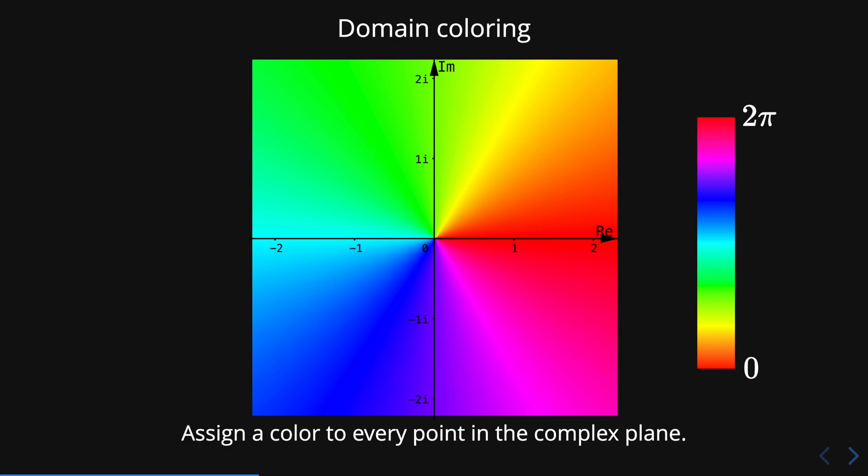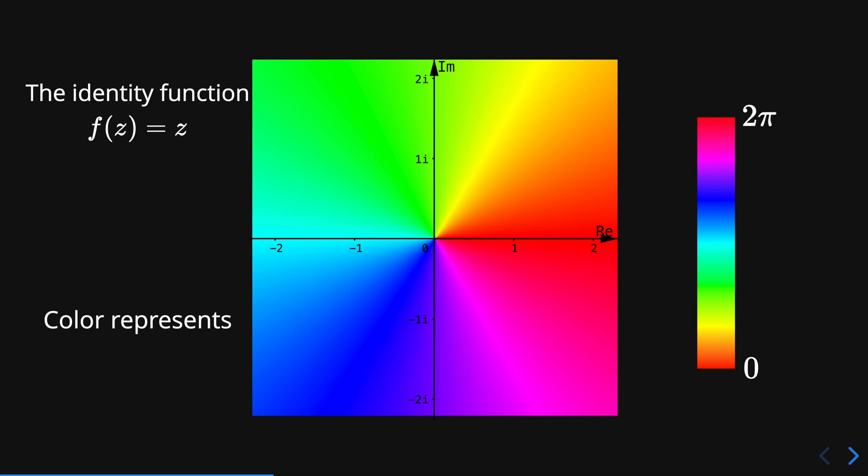Here you can appreciate the domain coloring representation of the identity function where the color represents the phase of the value of the function plotted on its domain. These plots are called phase portraits, a term that we will use from now on.